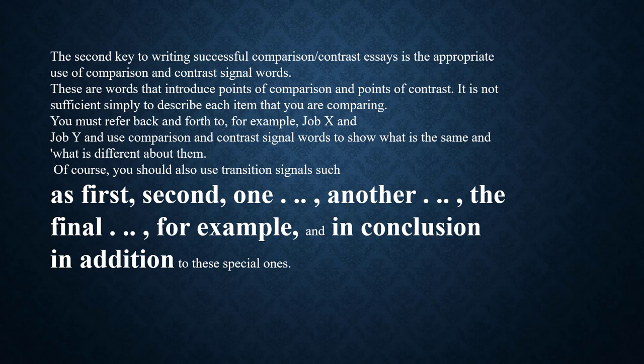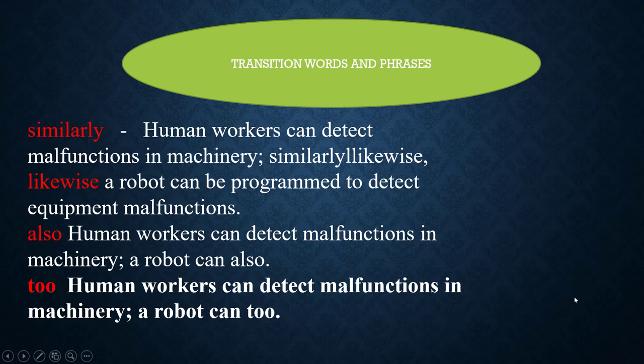Comparison signal words — transition words and phrases: 'Similarly' — for example, 'Human workers can detect malfunctions in machinery. Similarly, a robot can be programmed to detect equipment malfunctions.' 'Likewise' — used the same way. 'Also' — for example, 'Human workers can detect malfunctions in machinery. A robot can also.'